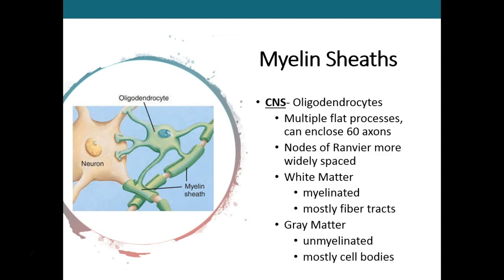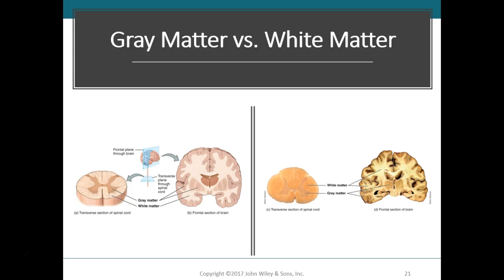The nodes of Ranvier are more widely spaced in the CNS, but again we have some tissues that are myelinated and some that are not. When we look at this tissue histologically, or look at a fresh sample, some of the tissue appears white in color. In freshly dissected brain or spinal cord, some regions look white and glistening — that's where we have myelinated tissue, mostly myelinated fiber tracts.